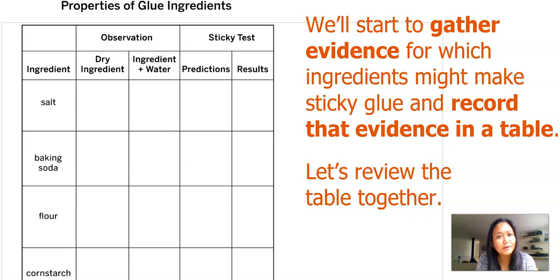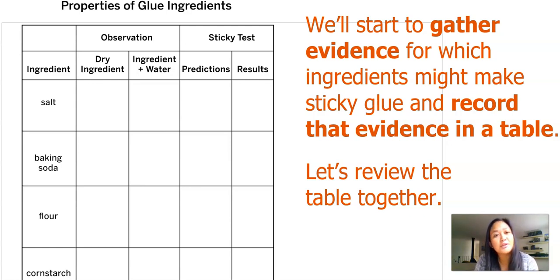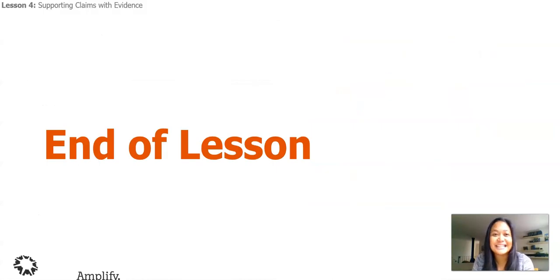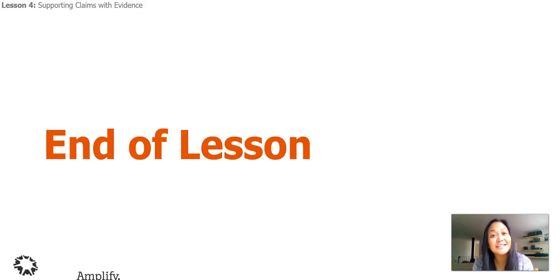You're going to do a few things in this lesson. First, you're going to observe the dry ingredient by itself. Then you're going to observe it with water. You're also going to do a sticky test, make a prediction about what you think might happen, and then record your results. That's the end of our lesson today. I hope you learned a lot from writing a claim and providing evidence, learning about our design goals and different glue properties. Next time, you're going to test different substances to find out which would make a sticky glue.